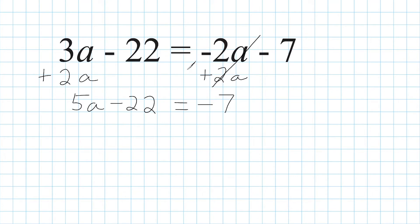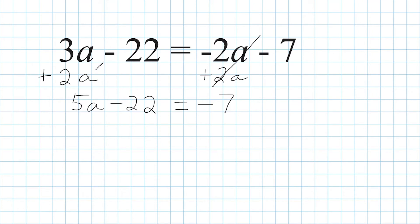So we moved this minus 2a over to the left-hand side by using the inverse operation, giving us 2a terms which can be combined. Remember, for terms to be like terms they must be the same variable and raised to the same power. Although we don't see an exponent here, anything without an exponent is really the same as to the first power. So 3a to the first and 2a to the first are like terms.